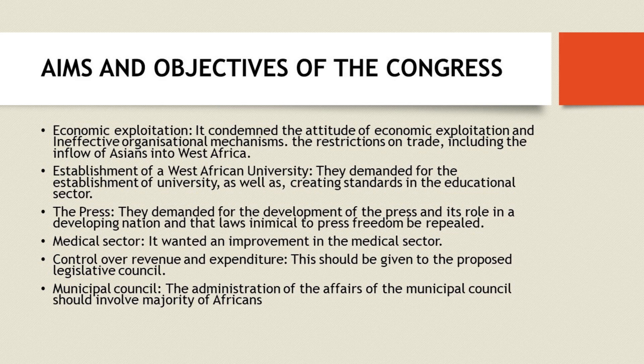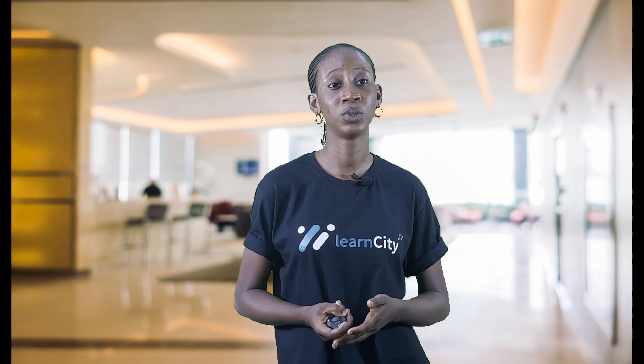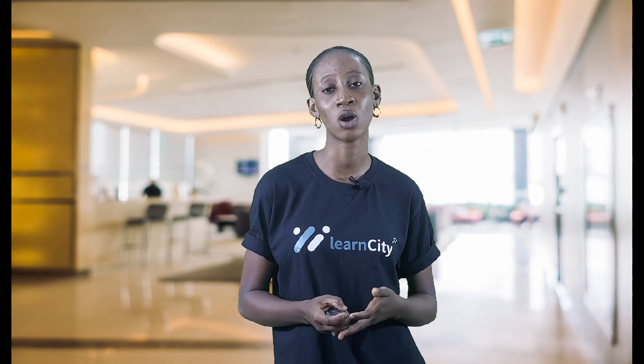Another aim of the Congress was to have control over revenue and expenditure. They felt that control over revenue and expenditure should be given to the proposed legislative council that they demanded. With this we've come to the end of this class. We looked at the aims and objectives of the National Congress of British West Africa, NCBWA. In the next class we'll be looking at the demands of the nationalists in the 1920s, also known as the demands of the NCBWA.